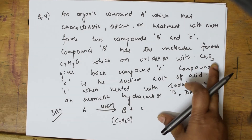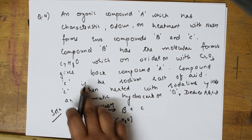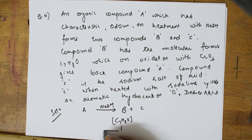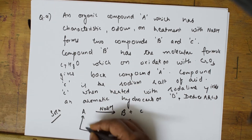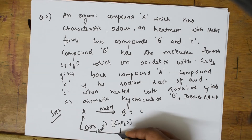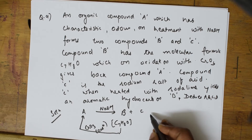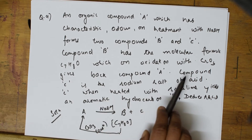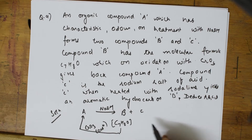Compound B on oxidation with CrO3 as oxidizing agent gives back compound A. Compound C is a sodium salt of an acid.